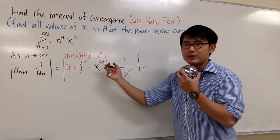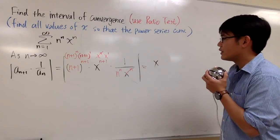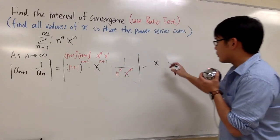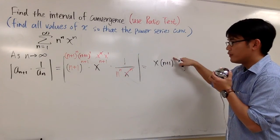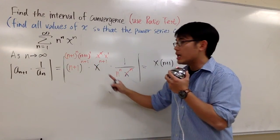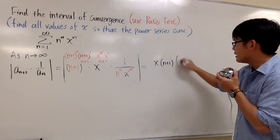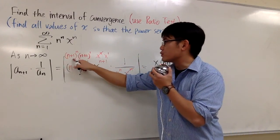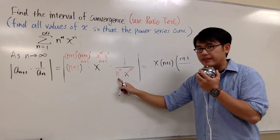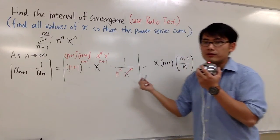On the top, let me put x first, and then (n+1)^1. Looking at (n+1)^n over n^n, since they both share the n power, we can write this as ((n+1)/n) raised to the n power. This is still in absolute value.